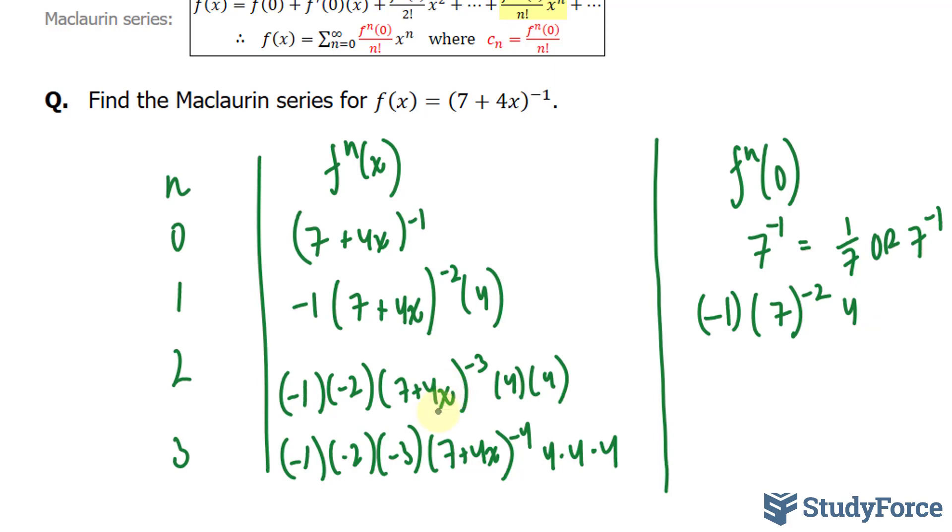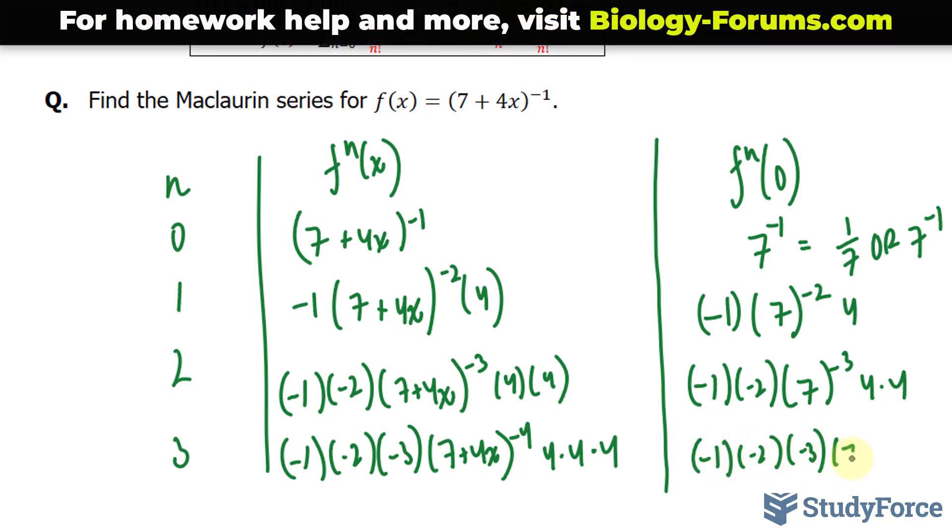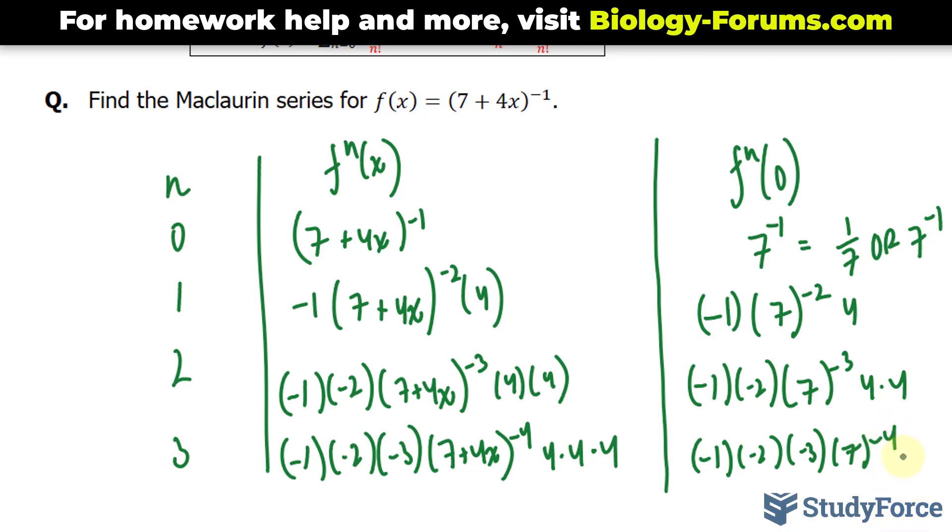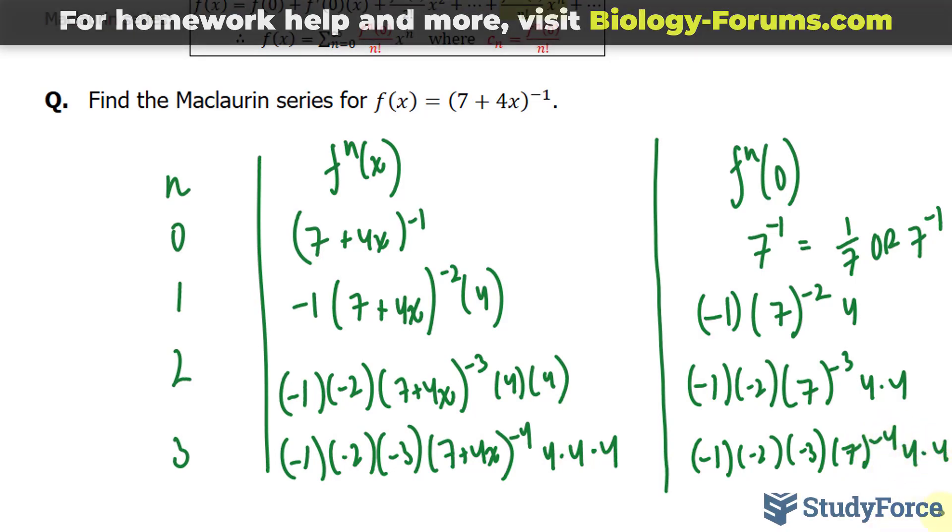Substituting zero into here gives me negative 1 times negative 2 times 7 raised to negative 3, 4 times 4. And over here I get negative 1 times negative 2 times negative 3 times 7 raised to the negative 4, 4 times 4 times 4.